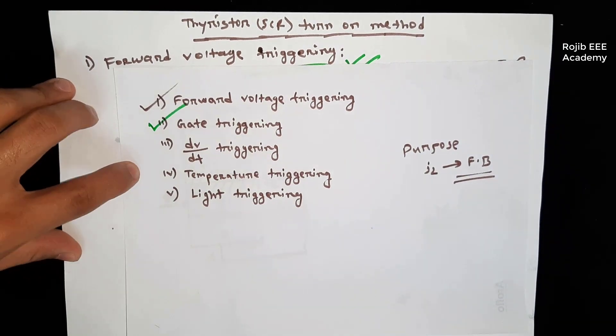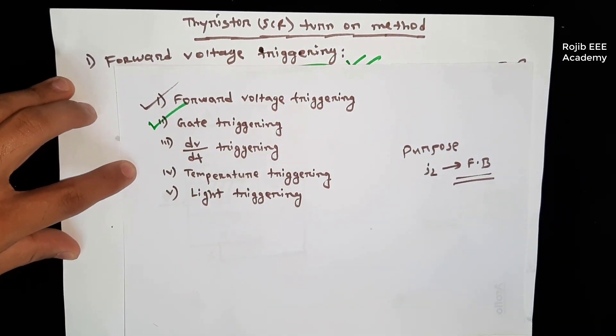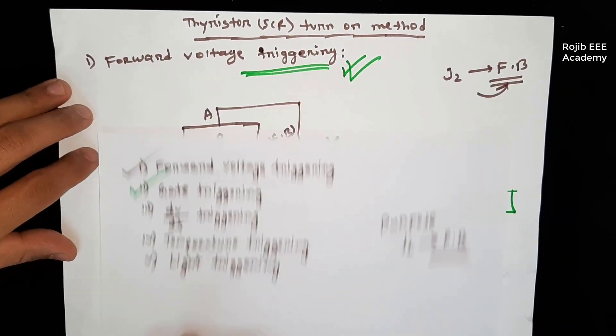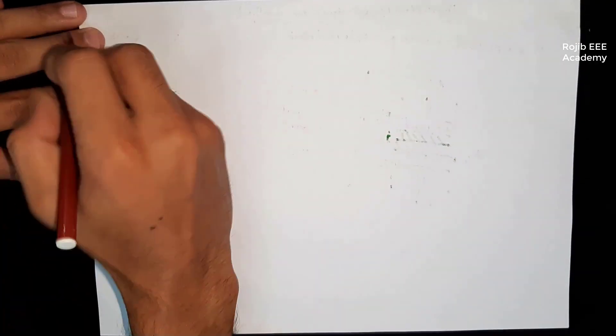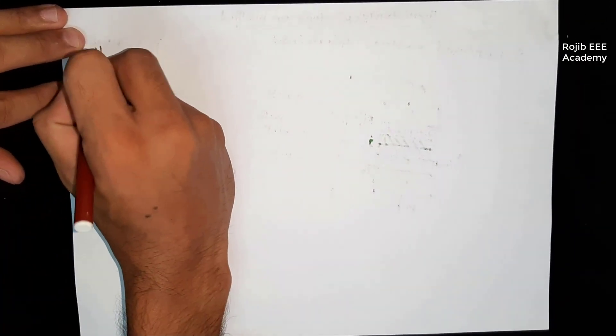Next is the gate turn-on method. We will use the gate to turn on the thyristor.